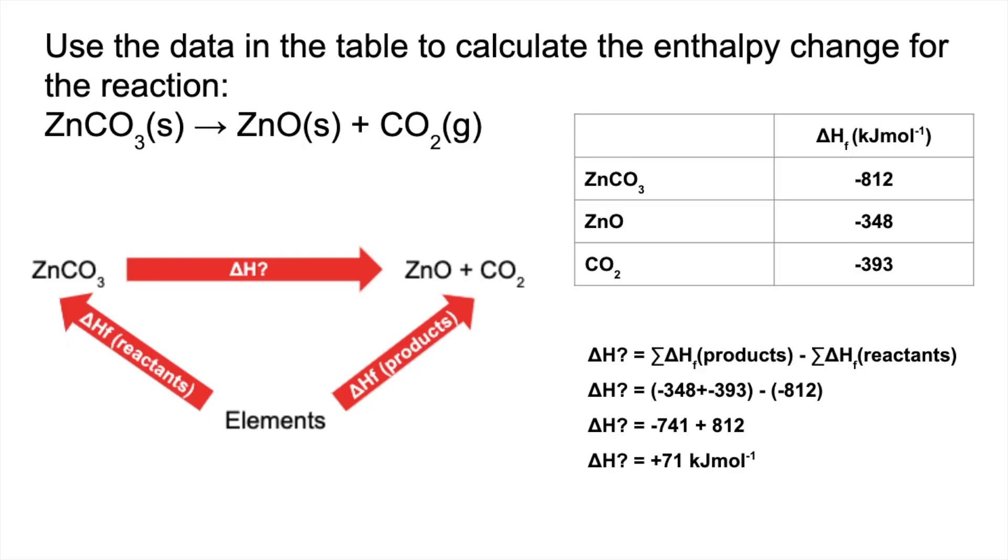I just want to make one final point now. If this equation had been balanced with numbers other than one, so let's say there was a 2 there, you would have to double the value for the ZnO, for example, because this value here is for one mole, kilojoules per mole. If the cycle's got two moles in it, obviously you've got to double it. Three, you would have to triple, and so on.